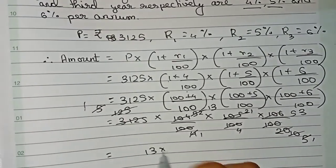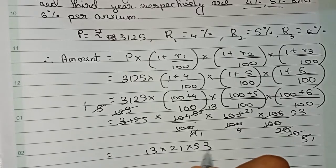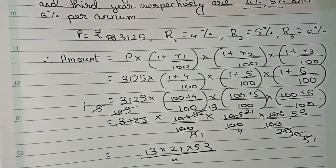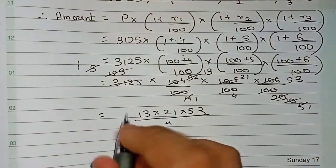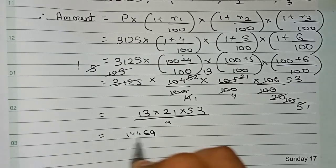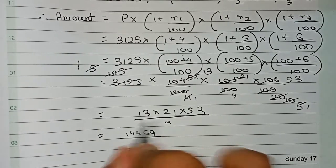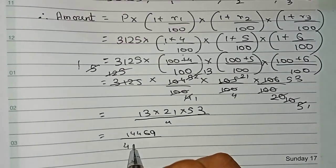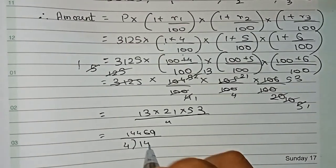Finally it becomes 13 into 21 into 53 by 4. Now 13 into 21 into 53 equals 14469. This is the value, so now it will be 14469 by 4.